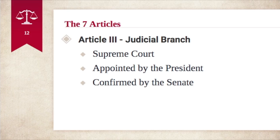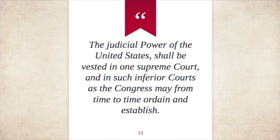Article three establishes the judicial branch, which consists of the Supreme Court. Unlike the first two articles, where senators, representatives, and the president are elected by the people through voting, the Supreme Court justices are appointed by the president and confirmed by the Senate. A quote reads: "The judicial power of the United States shall be vested in one Supreme Court and in such inferior courts as the Congress may from time to time ordain and establish."